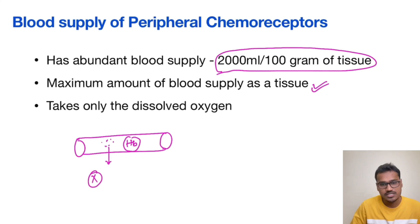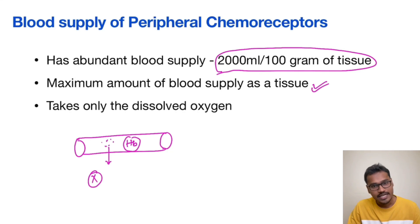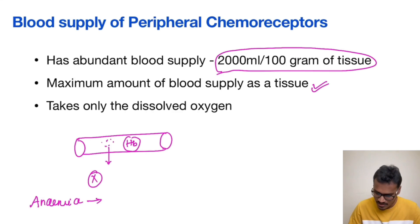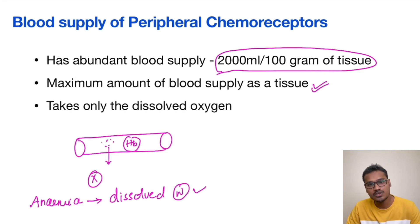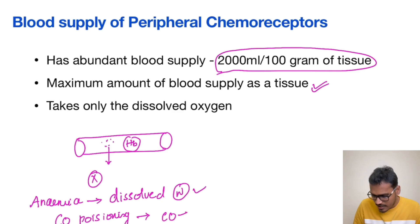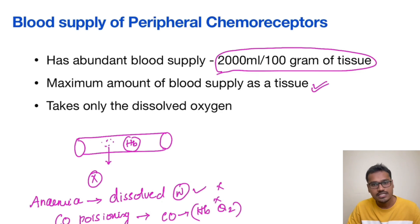There is a disadvantage to this process. There are some conditions where the tissue oxygen supply is very less, but the dissolved oxygen can still be normal — and these conditions cannot stimulate the peripheral chemoreceptors. The classical examples are anemia, where only the hemoglobin-bound oxygen is reduced but dissolved oxygen is normal, and carbon monoxide poisoning, where CO replaces hemoglobin-bound oxygen. In both conditions, the dissolved form is unaffected, so the peripheral chemoreceptors are not stimulated.